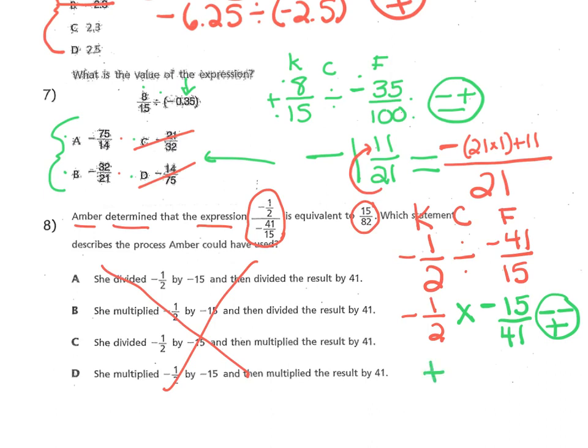So your answer, whatever it is, is going to be positive. And just a reminder, the way we multiply our fractions, we certainly do top times top. 1 times 15 is 15. Bottom times bottom. 2 times 41 is 82. So Amber was right, and that was a good review for us.